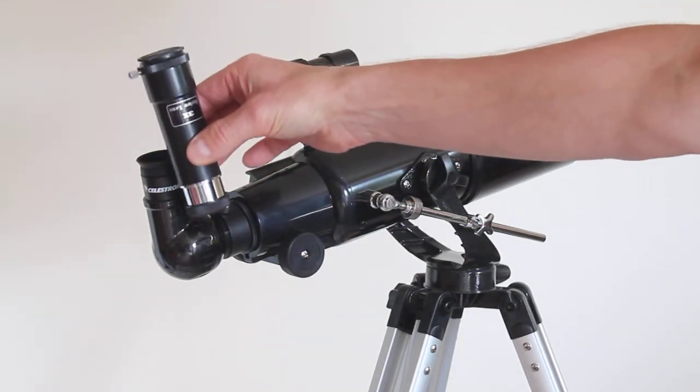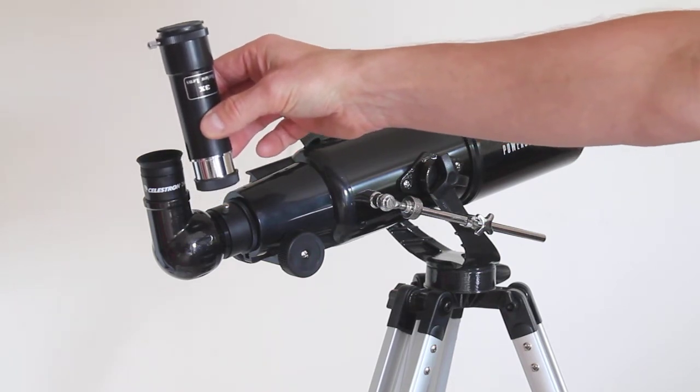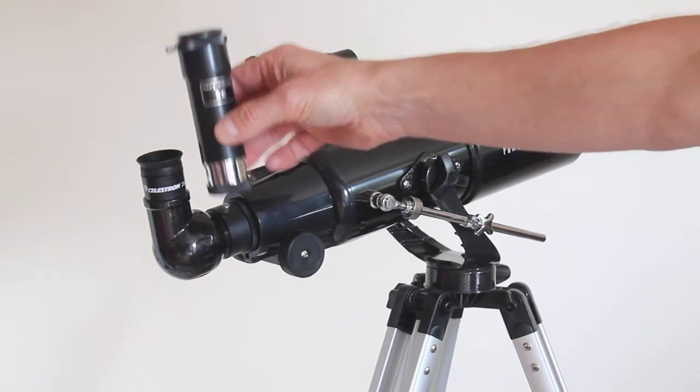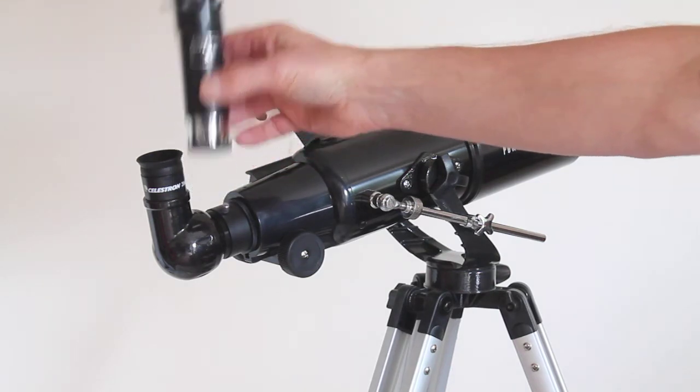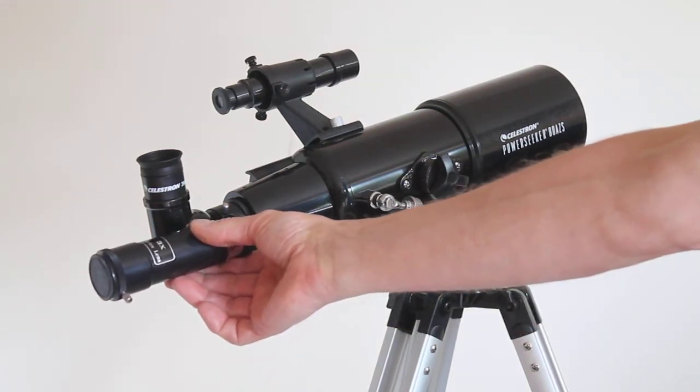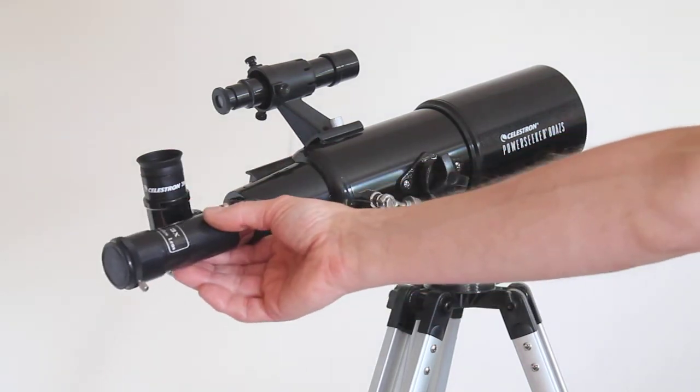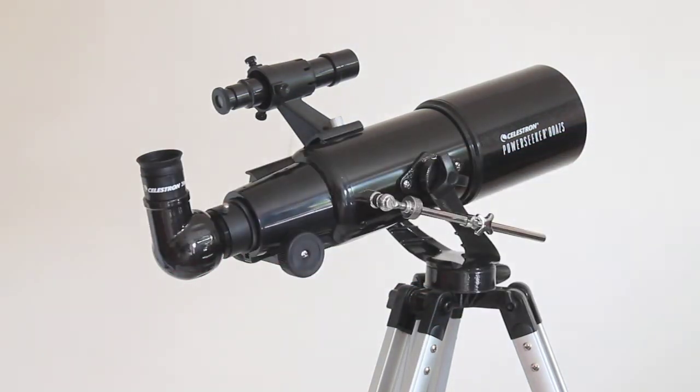Unfortunately, because it's long, there is not enough travel on the focuser to get focus. So you have to take the diagonal out, put the Barlow there, and put your eyepiece on the end of the Barlow. Sadly that does give an upside down image. But I did find that you can actually get short tube Barlow lenses that work perfectly well with this telescope.